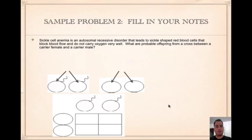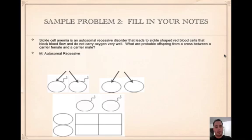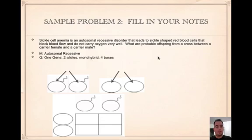Sample two. Sickle cell anemia is an autosomal recessive disorder that leads to sickle-shaped red blood cells that block blood flow and do not carry oxygen very well. What are the probable offspring from a cross between a carrier female and a carrier male? We know it's autosomal recessive because they told us. It's one gene because we're only talking about sickle cell anemia, so two alleles, monohybrid, and four boxes.